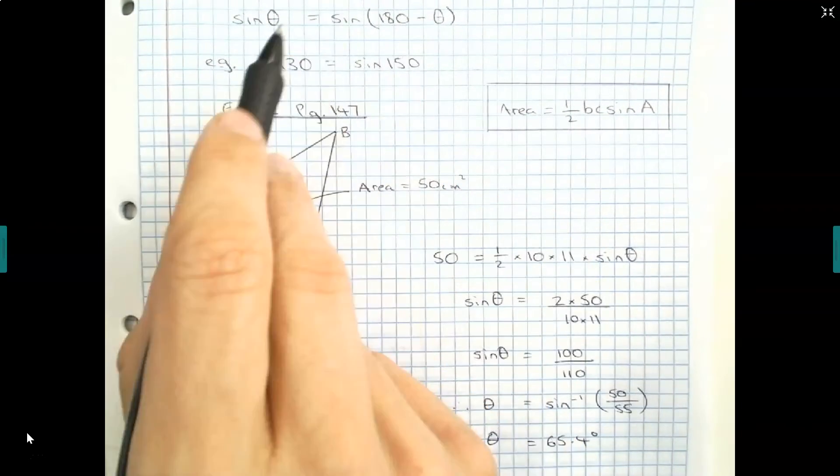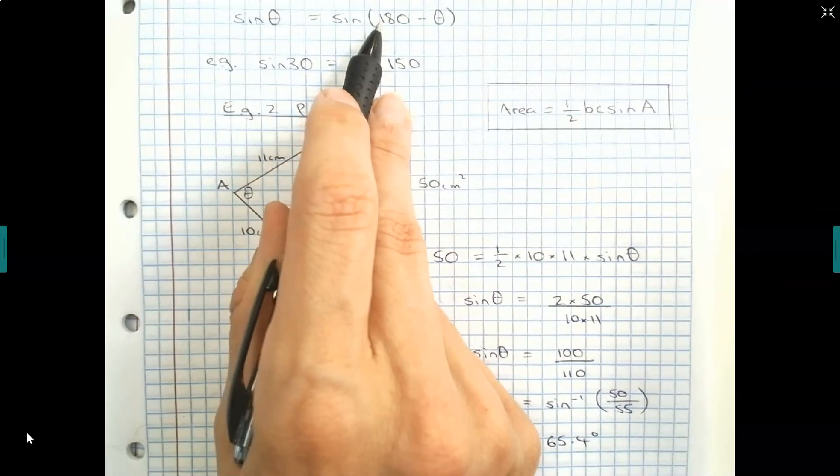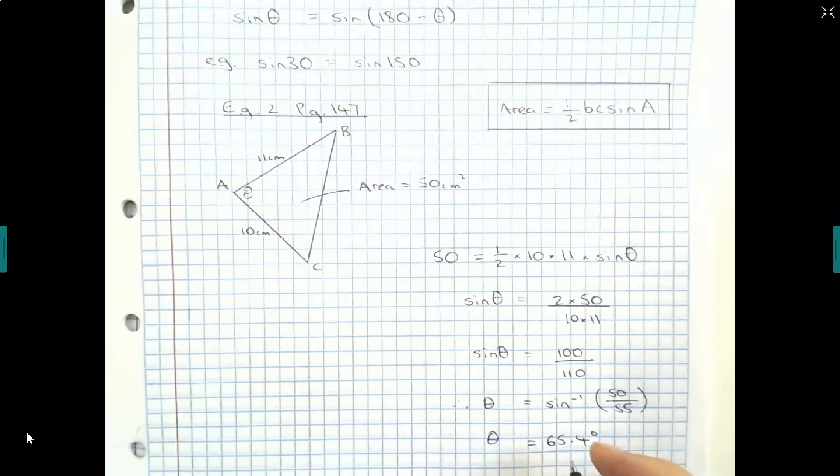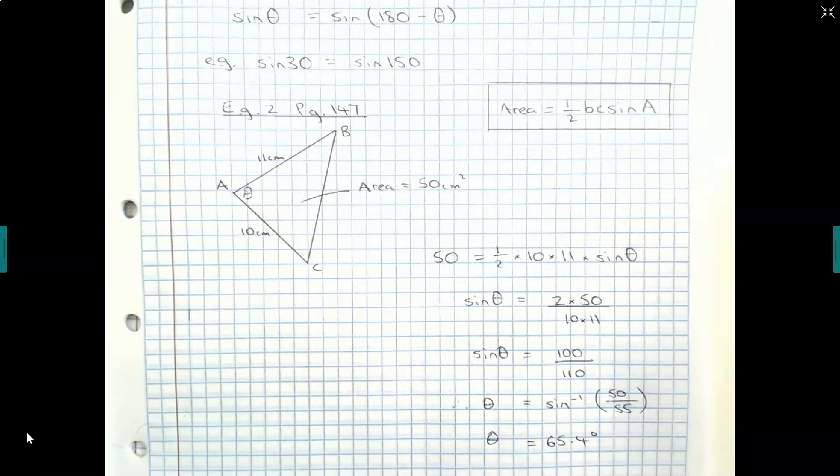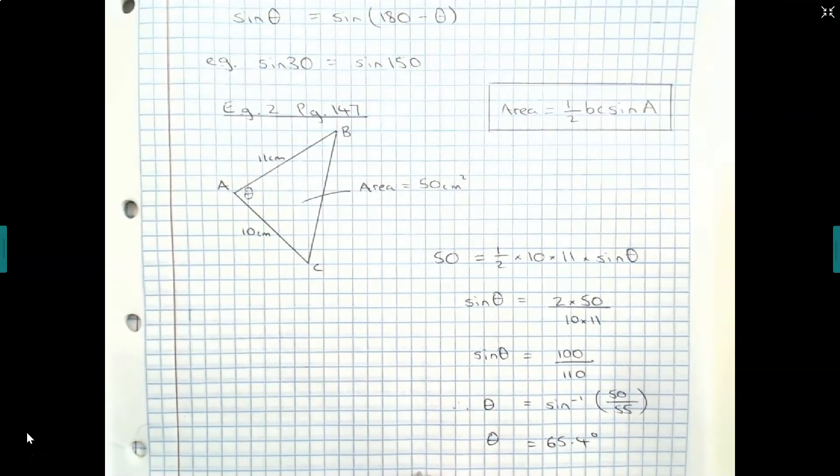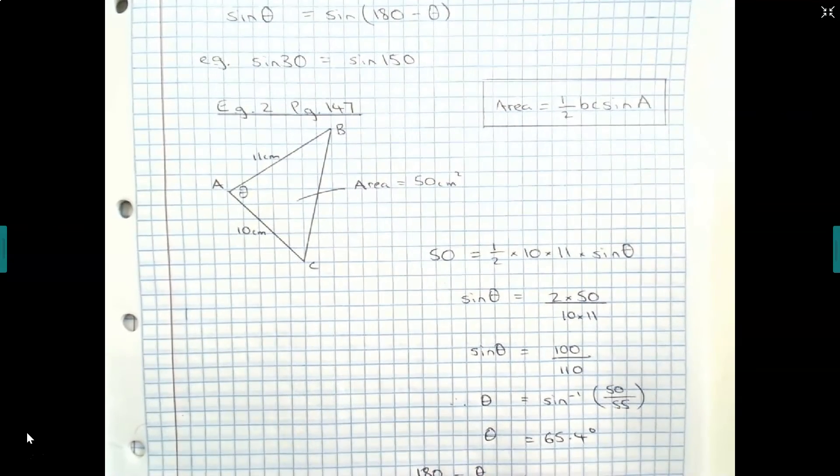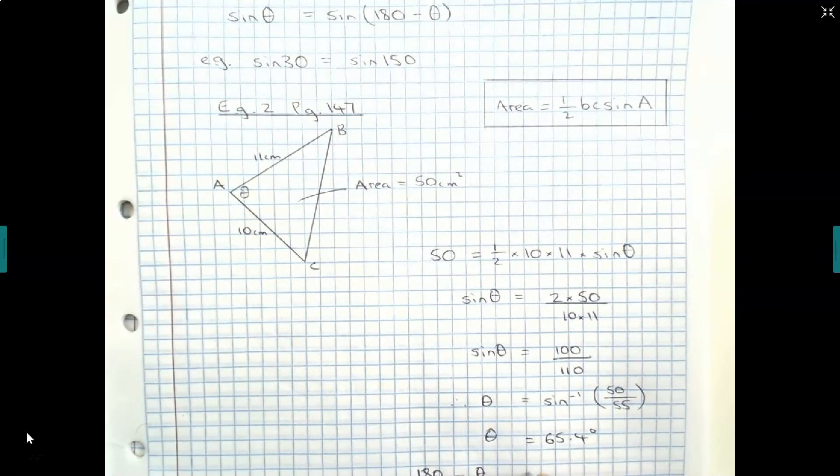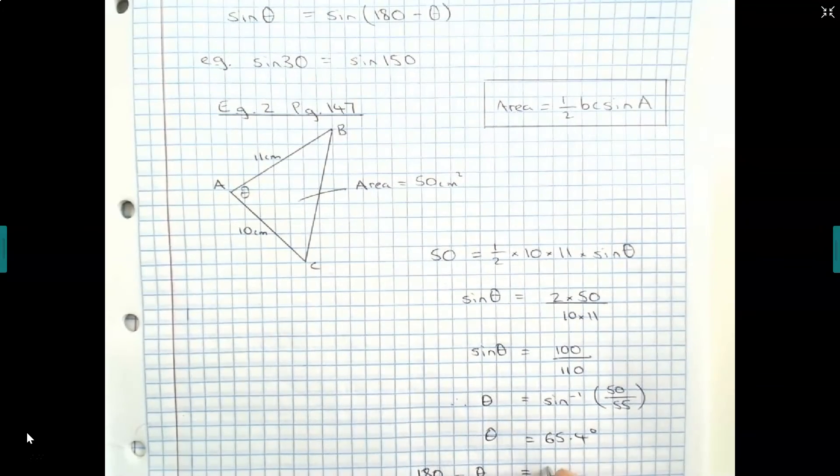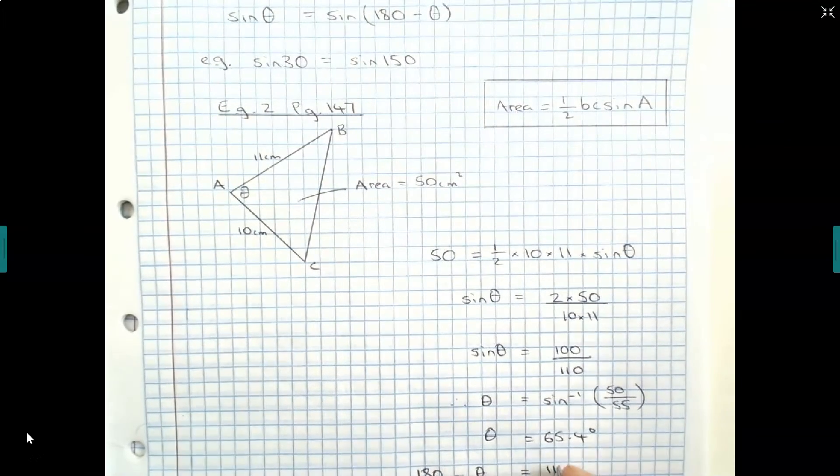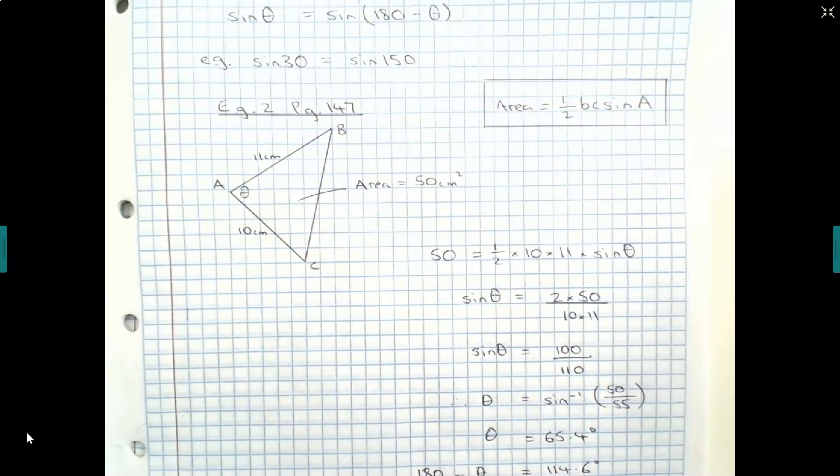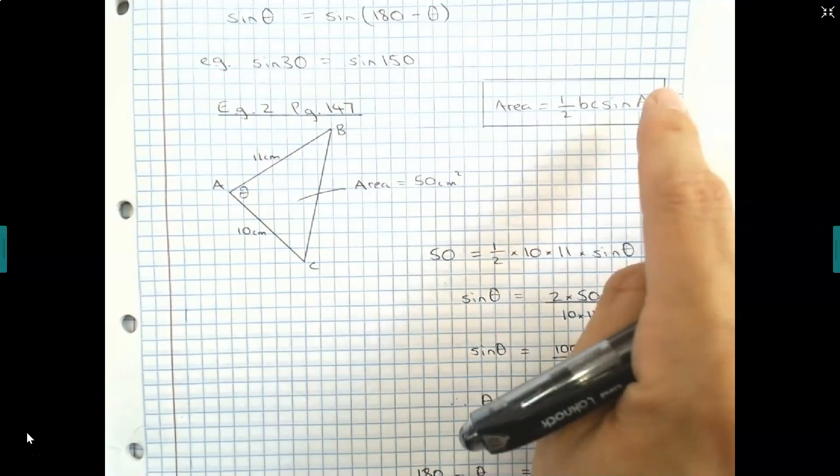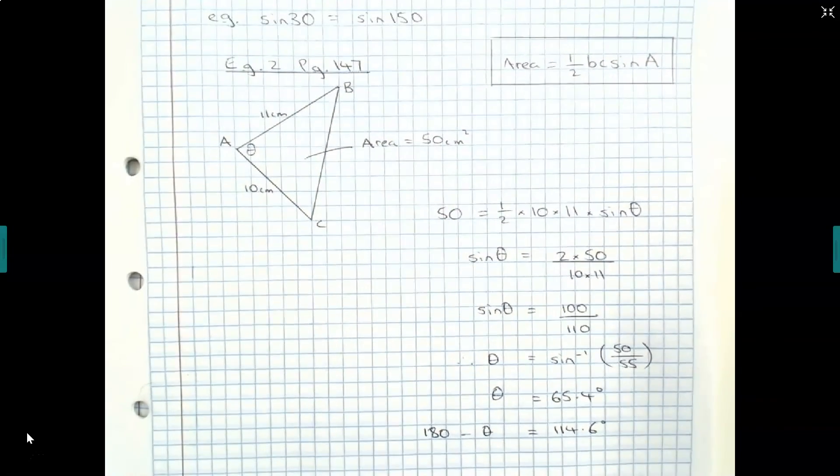We know that sine of theta is equal to sine of 180 minus theta. Therefore, whatever the angle 180 minus theta is equivalent to, which would be 114.6 degrees, we could also have an angle of 114.6 degrees which would result in the same area. So what would that mean?